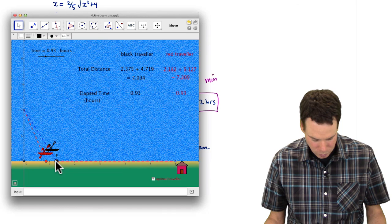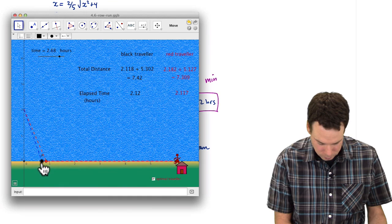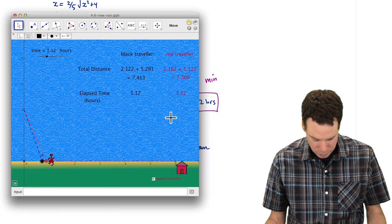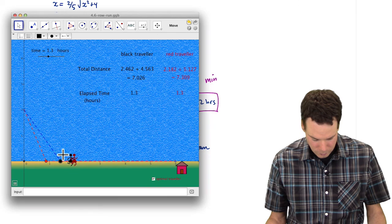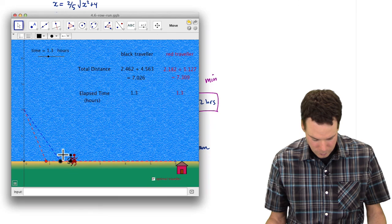What that means is no matter where I move this other point, as long as it doesn't coincide with the red point, the red traveler is always going to win. So I'll go slightly before. See that even though the black traveler hits the beach and starts running, the red traveler still manages to creep out in the lead. And so we found the optimal spot where she should beach her boat and run the remaining way.